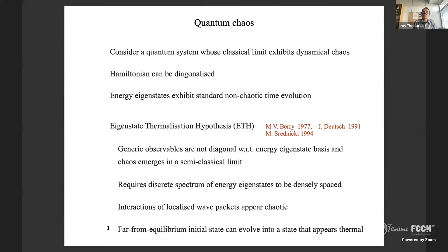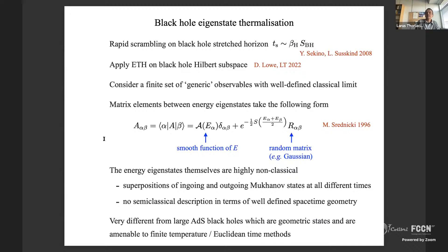If these conditions are satisfied, you can have a very far-from-equilibrium initial state that will very rapidly evolve into a state that appears thermal. This has been worked out quantitatively, for example, for a hard-sphere gas studied by Srednicki. These ideas are originally due to Berry and were elaborated on by Deutsch and Srednicki, and it's Srednicki's formulation that we will be following.